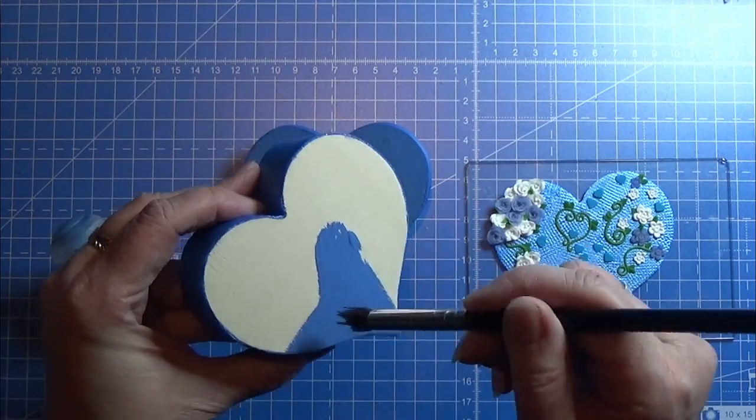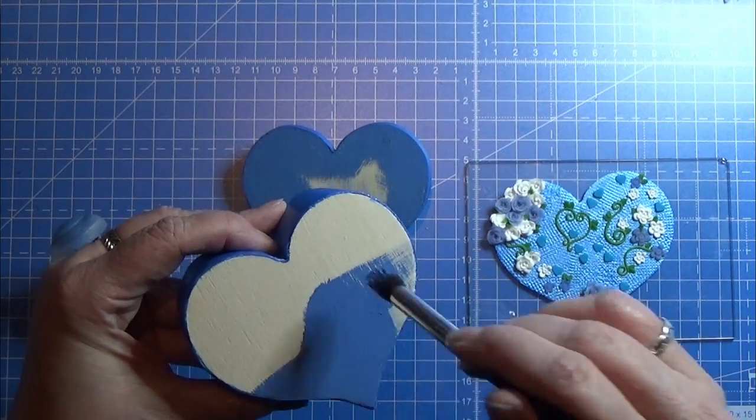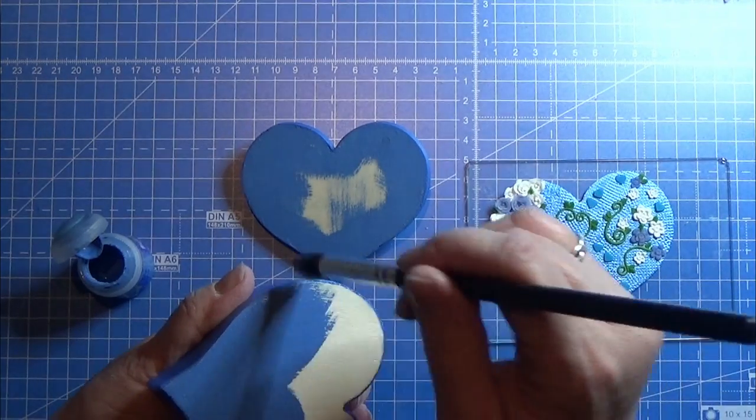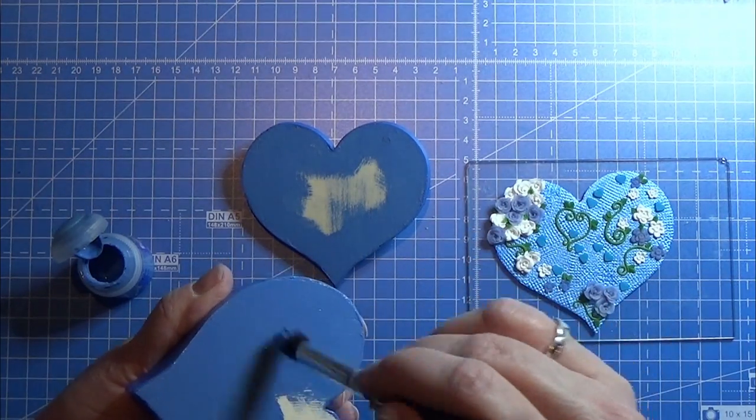I'm just going to color in the bottom of the box as well just to make it look a little more nice and neat. Then I'm going to let it dry before I glue on the top part.